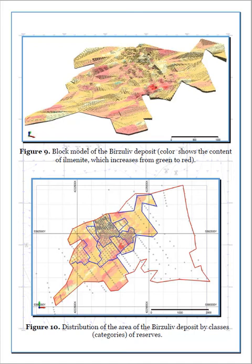To delineate the reserves of different classes and categories, closed contours were created that limit the areas of different degrees of study (Figure 10). As a result, a block model of the deposit was obtained which reflects the distribution of Ilmenite. The model allows not only more accurate estimation of reserves and other parameters of the deposit, but also to quickly decide on the direction of extraction work depending on market conditions for Ilmenite concentrate or other factors. By assigning category contour indices to each of the blocks, all stocks of the block model were divided into corresponding classes and categories.